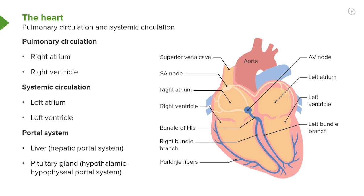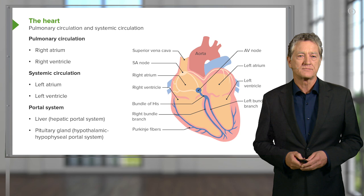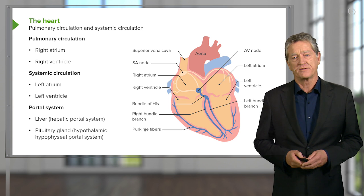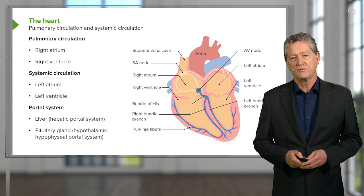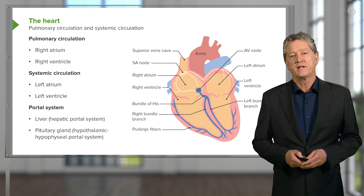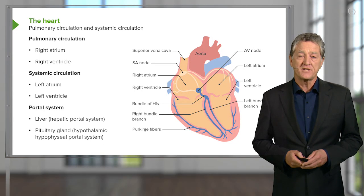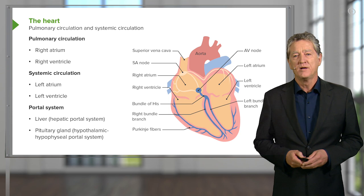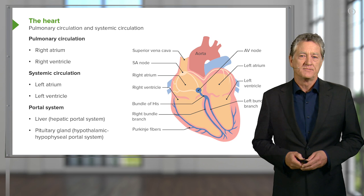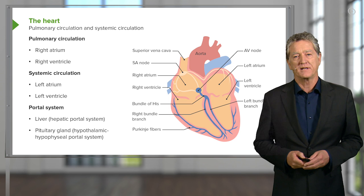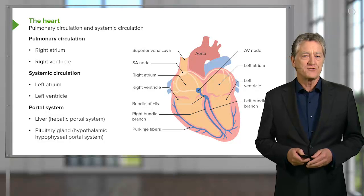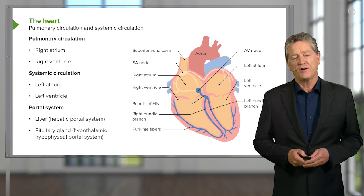So that is really just to orientate yourself with this diagram so you can have some clear understanding of the structures we're going to talk about later on. There are two sorts of circulation. Firstly, there is the pulmonary circulation — this is where the heart receives blood from the rest of the body and pumps that deoxygenated blood to the lungs. It passes through the lungs, becomes oxygenated, and is then returned to the left side of the heart, where it is pumped out to the rest of the body. The pulmonary circulation refers to that circulation of blood to and from the lungs.